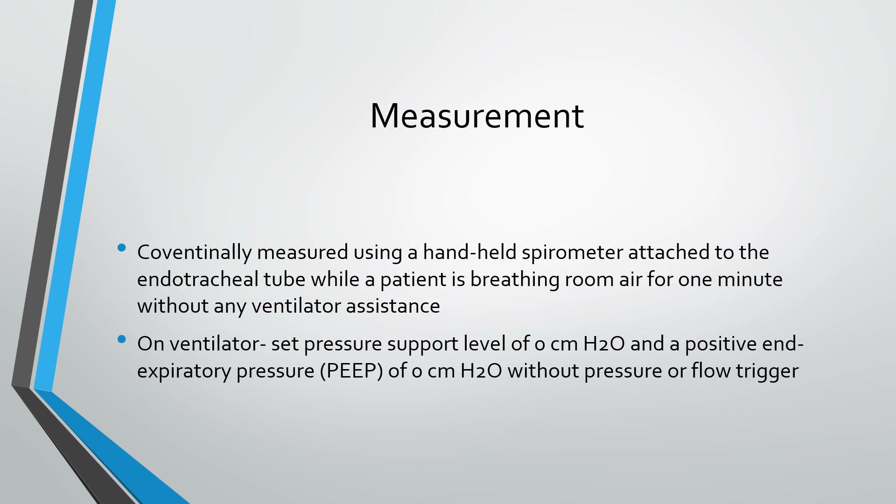How do we measure RSBI? Conventionally, we measure F, which is respiratory rate, and VT, which is tidal volume in liters, using a handheld spirometer attached to an endotracheal tube while the patient is breathing room air for one minute without any ventilatory assistance. This means we first disconnect the patient from the ventilator and the spirometer is attached to the endotracheal tube.